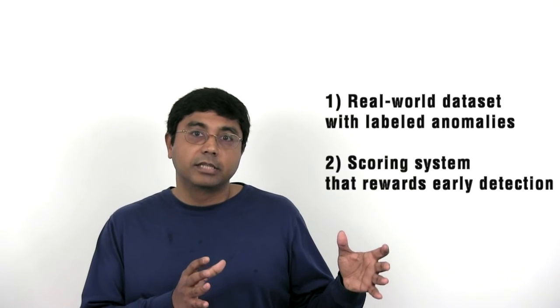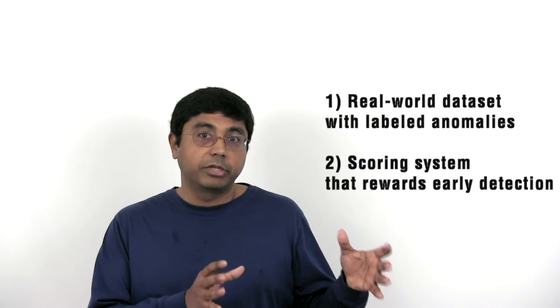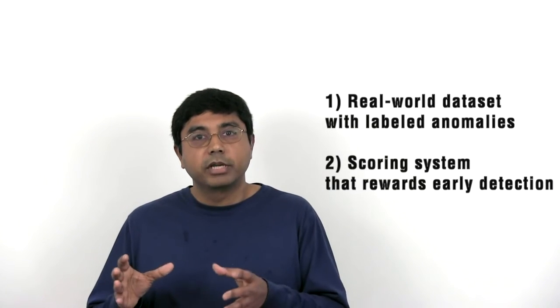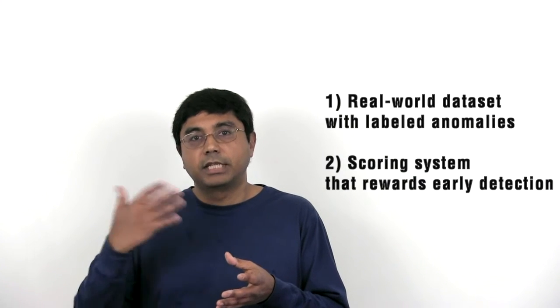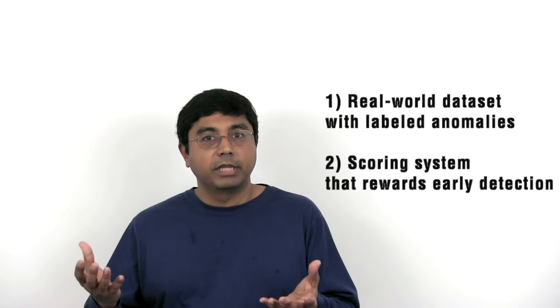So what is NAB? NAB is an open-source benchmark for benchmarking anomaly detection algorithms that are designed for real-time streaming analytics. There are a lot of other benchmarks for anomaly detection, but very few that really focus on real-time data. NAB consists of two different components. One is a dataset consisting of real-life data that are labeled with anomalies. And the second part is a very unique scoring system that tries to promote the early detection of anomalies in real-time data.